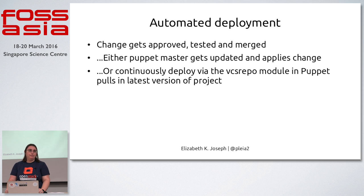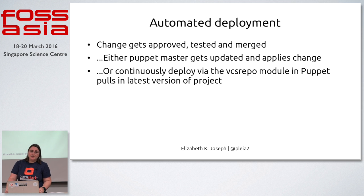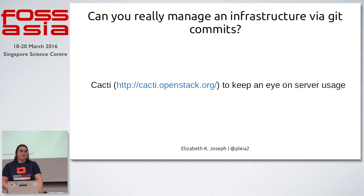Once things are code reviewed, we continuously deploy in our infrastructure. The change gets merged and our Puppet master — which is actually Ansible now, we're driving all of Puppet with Ansible, though it still runs off a server called Puppet Master — will grab the change and apply it to the servers. We also have a Puppet module that will continuously deploy if something is committed to a Git repository. There are a few exceptions — Gerrit itself, since upgrading Gerrit is really complicated and takes time.